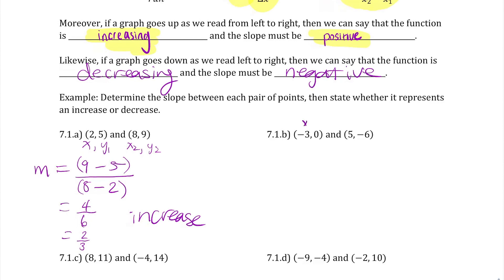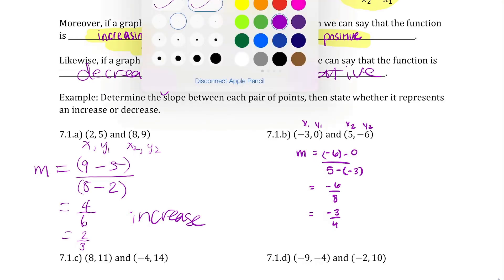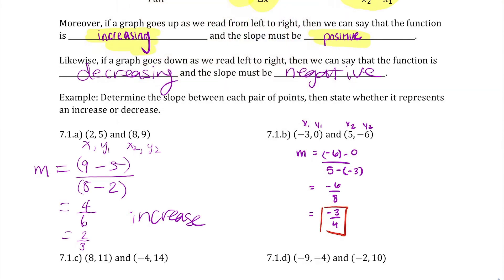All right, with our next point, we could do the same thing. We could label our x1, y1, our x2, and our y2, and substitute into our formula. So we have our slope, which is represented by a lowercase m. Then we plug in our points. Our y2 is negative 6, and our y1 is 0. Our x2 is 5, and our x1 is negative 3. When we go ahead and do this, we get a negative 6 over a positive 8, which reduces to a negative 3 over 4. Because we have the slope end up as a negative value, we can see that the slope will then be decreasing, or the function as a whole will be decreasing.